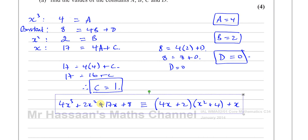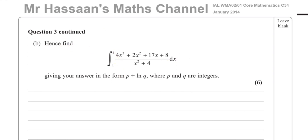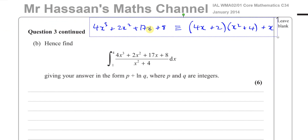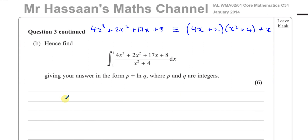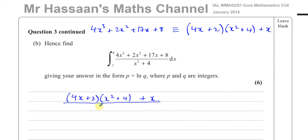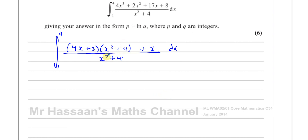Now for part B, which says 'hence find the integral of this expression.' The word 'hence' means using what we just found. We're going to integrate between the limits of 4 and 1 and express the answer in a given form. I'm going to rewrite the integrand using what we found: (4x + 2)(x² + 4) + x, all over x² + 4, integrated with respect to x between limits 4 and 1. We can see that x² + 4 is a common factor, so I can split this into two fractions.